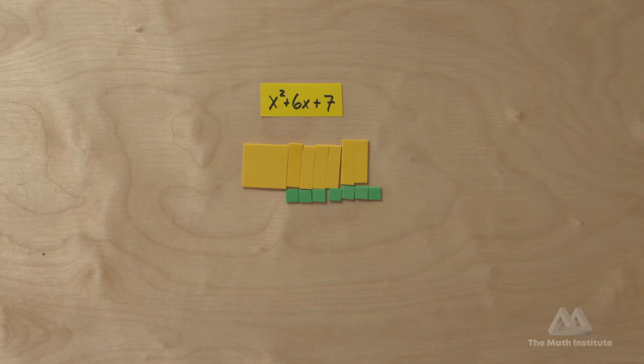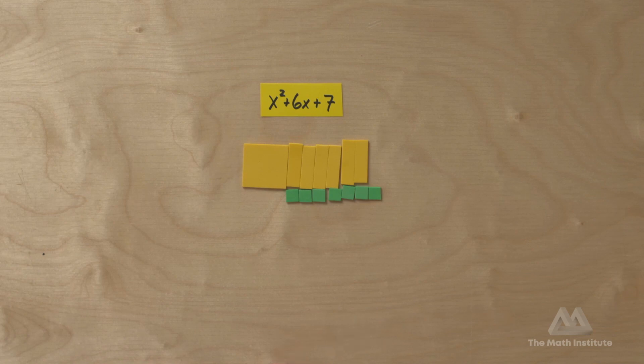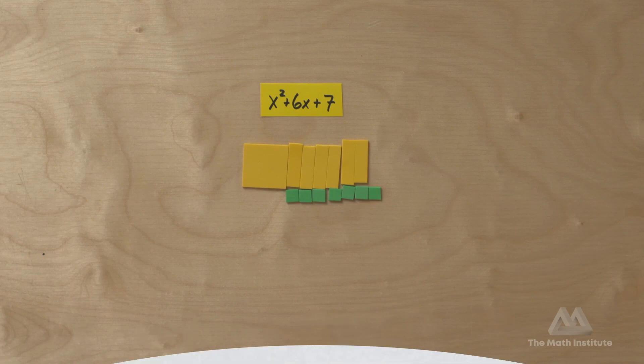But today I'd like to do something different — not actually factoring it, but let's see how close we can get. If we're going to work with these pieces without making rectangles, we might as well do the most perfect thing possible, and the most perfect rectangle is a square. So take the same pieces — the x squared, the six x, and the seven — and see if you can make as close to a square as you can. You're not going to make a complete square, but just see how close you can get. Pause the video, try it, then come back.